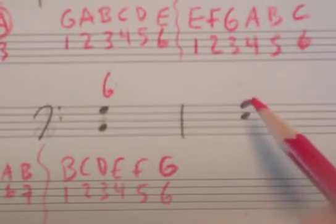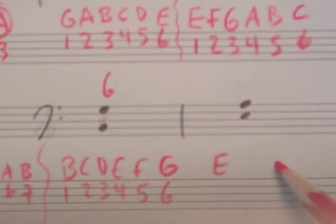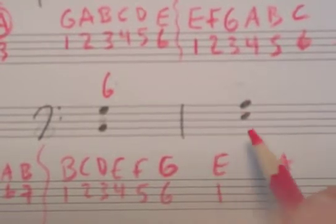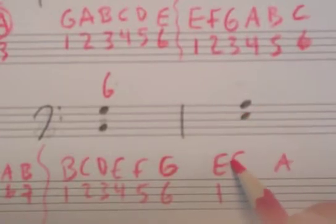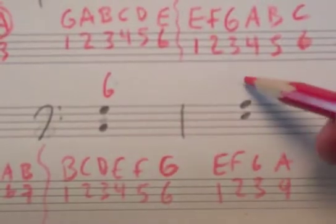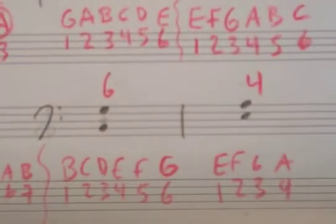Next one, E up to A. So E is 1, F is 2, G is 3, and A is 4. E to A is some sort of fourth.